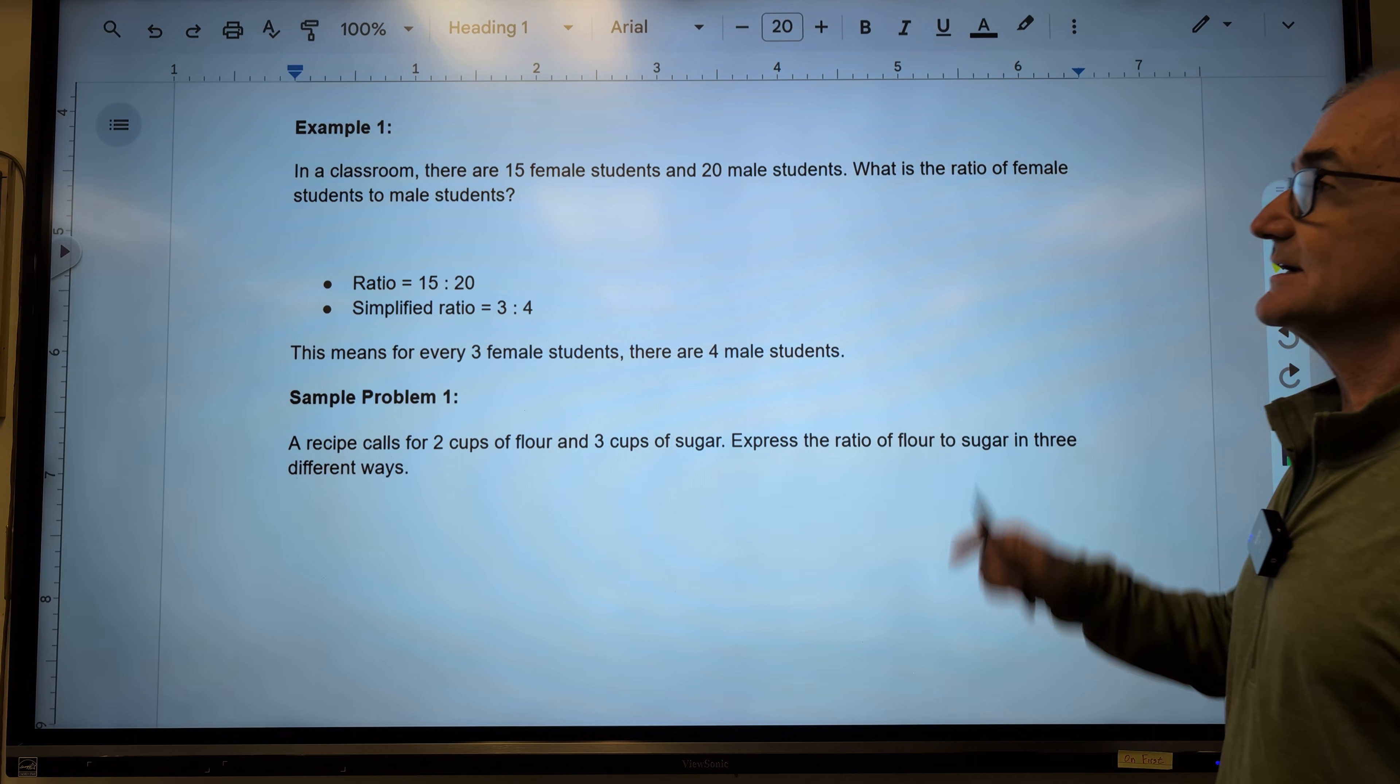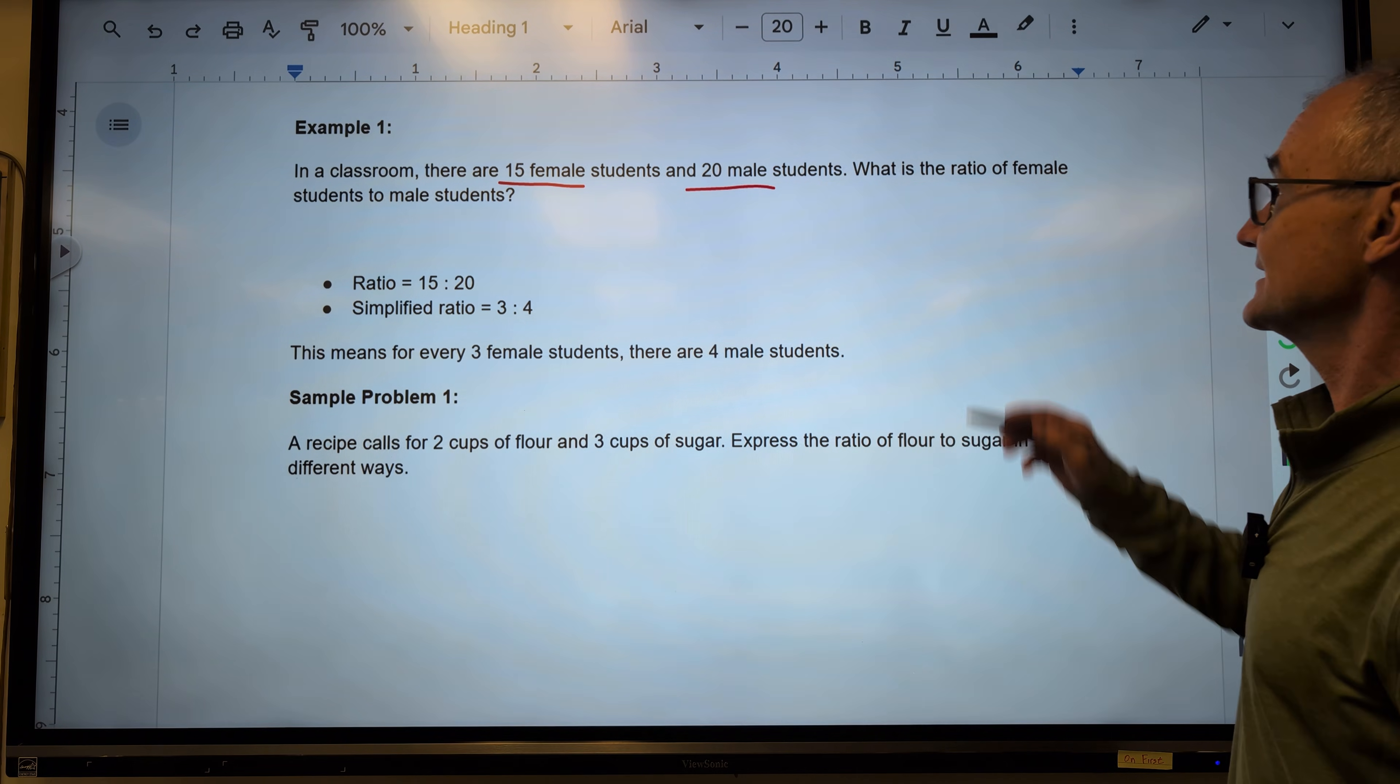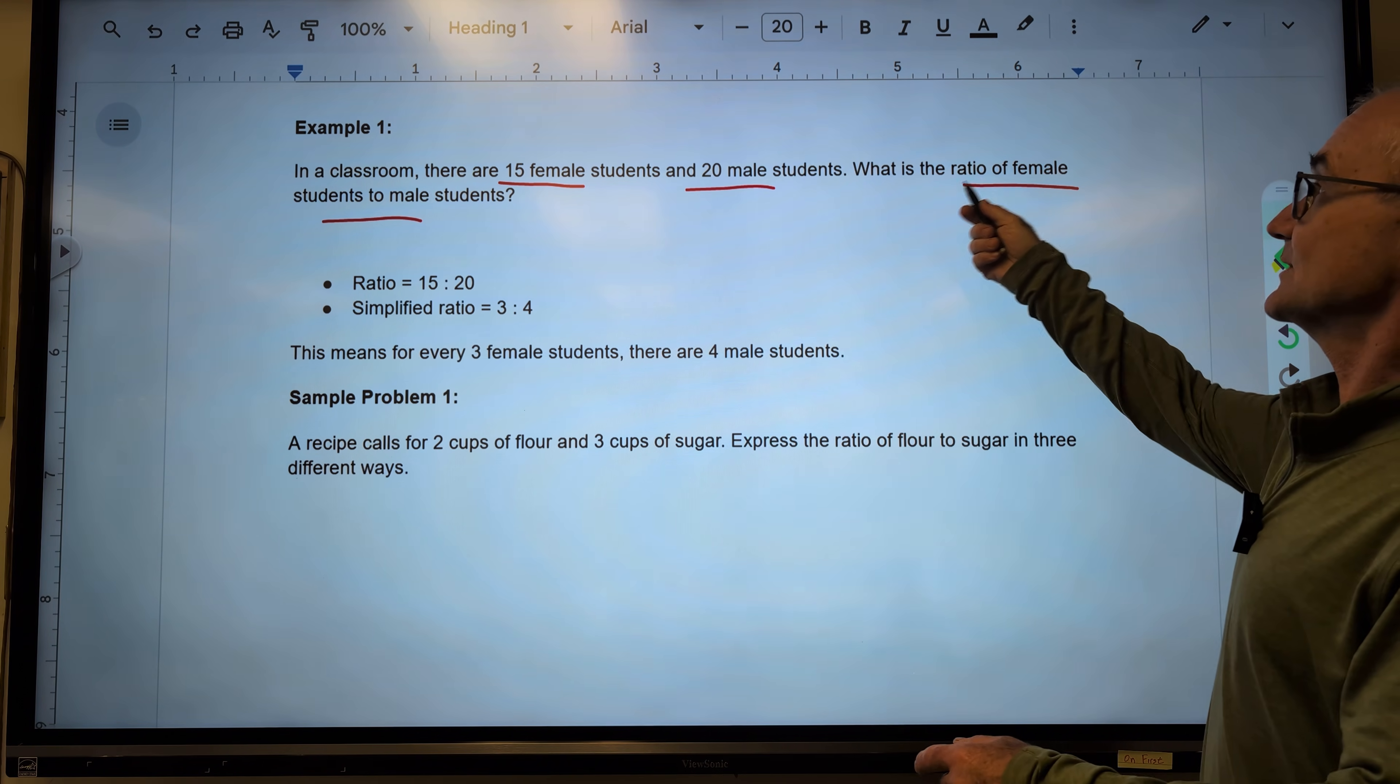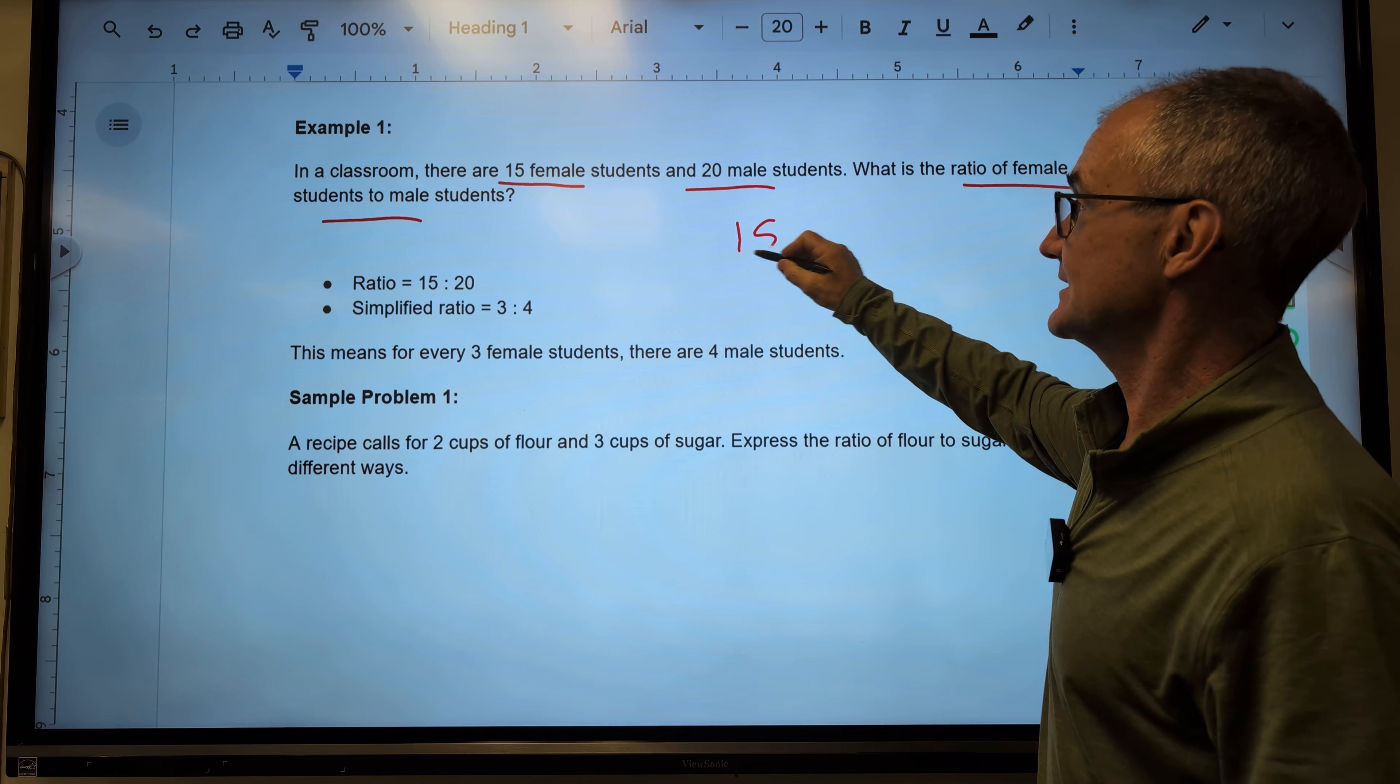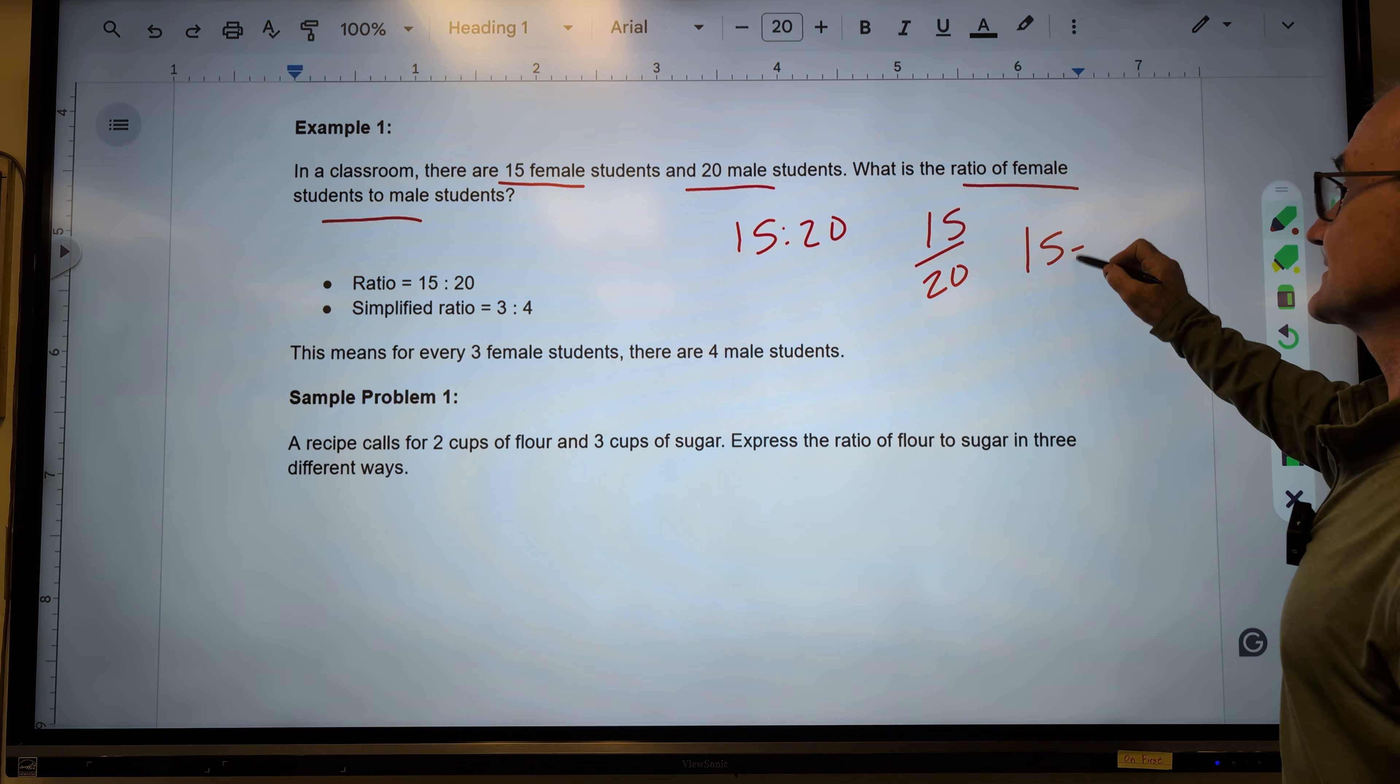As an example, if you're looking at a classroom and there are 15 female students and 20 male students, what is the ratio of females to males? It is important. The order you read those is the way you're going to write the ratio. So it has to be ratio of females to males. So I could write that 15 to 20, or I could write that as 15 to 20, or 15 to 20.